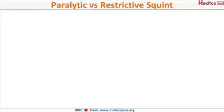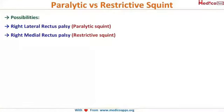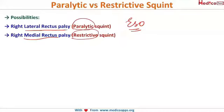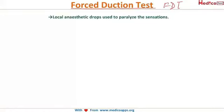Now, how will you know if a patient with incomitant squint has paralytic squint or restrictive squint? For example, when a patient has an eso deviation — an inward deviation — there are two possibilities: either lateral rectus palsy due to paralysis, or medial rectus restriction due to restrictive squint. We differentiate these using the Forced Duction Test (FDT). First, local anesthetic drops are applied to paralyze the sensations of the eye.